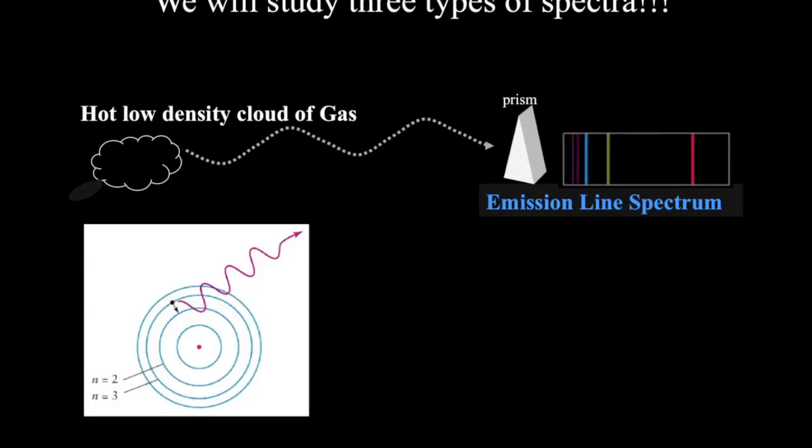It looks like this. And so we have a hot, low-density cloud of gas. For example, that could be a nebula in space. Well, that's only going to produce the specific colors that the atoms in that cloud are sensitive to.